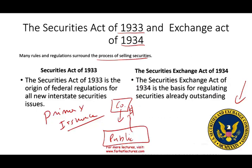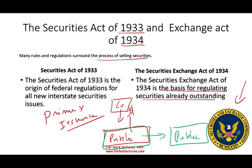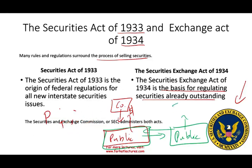The 1934 Act is the basis for regulating securities already outstanding. Once the company has sold stocks to the public, the public can then exchange those stocks with other members of the public — a third party — with the company no longer involved. So the 1934 Act regulates the secondary market. The 1933 governs the primary market, and the 1934 governs the secondary market. The SEC administers both acts — the Securities and Exchange Commission is a federal agency.